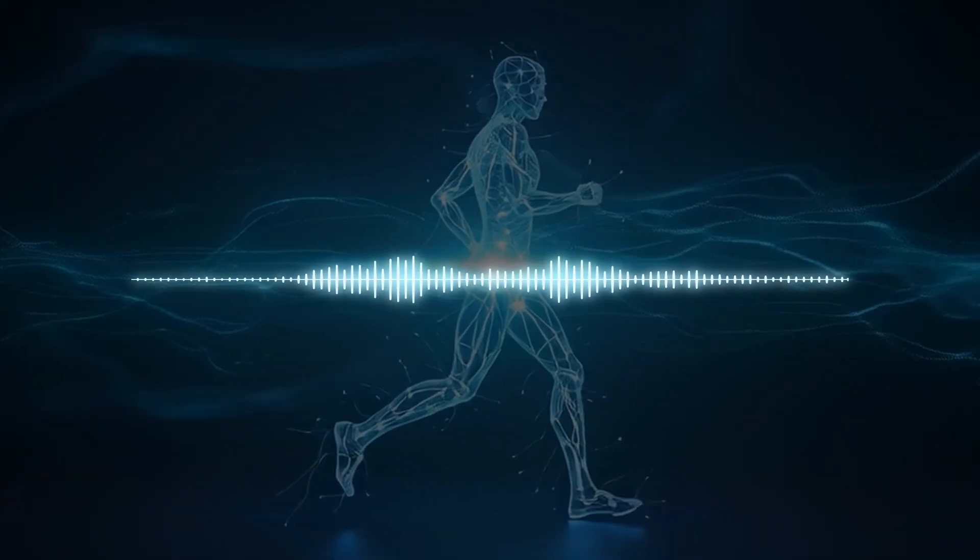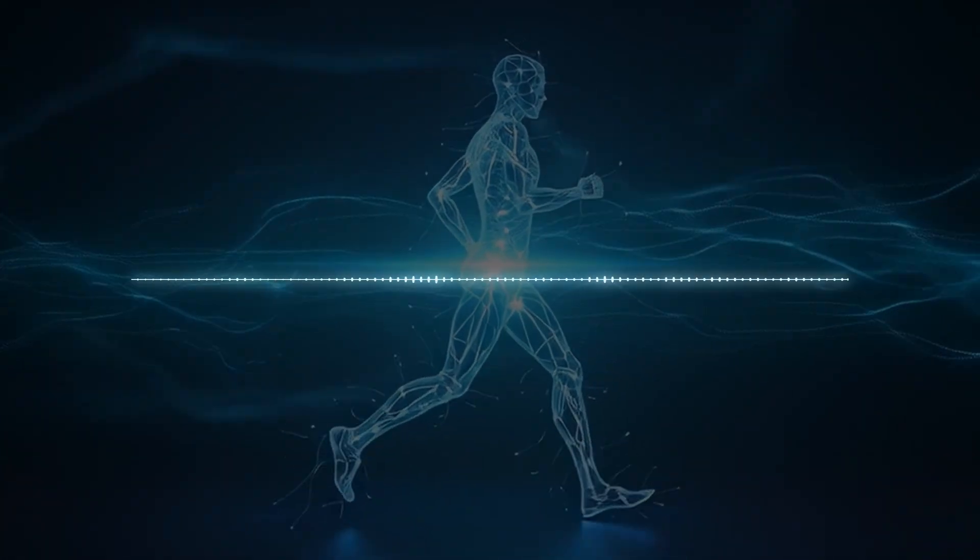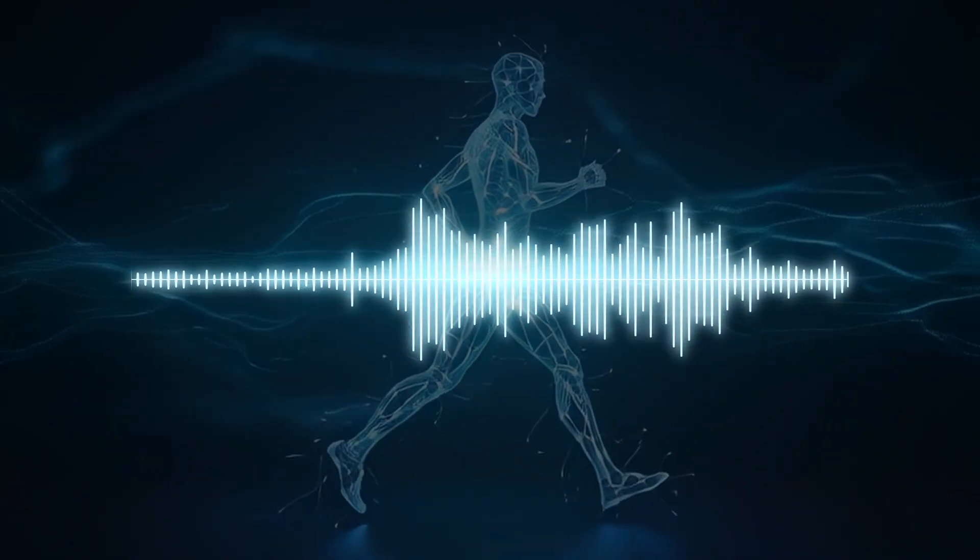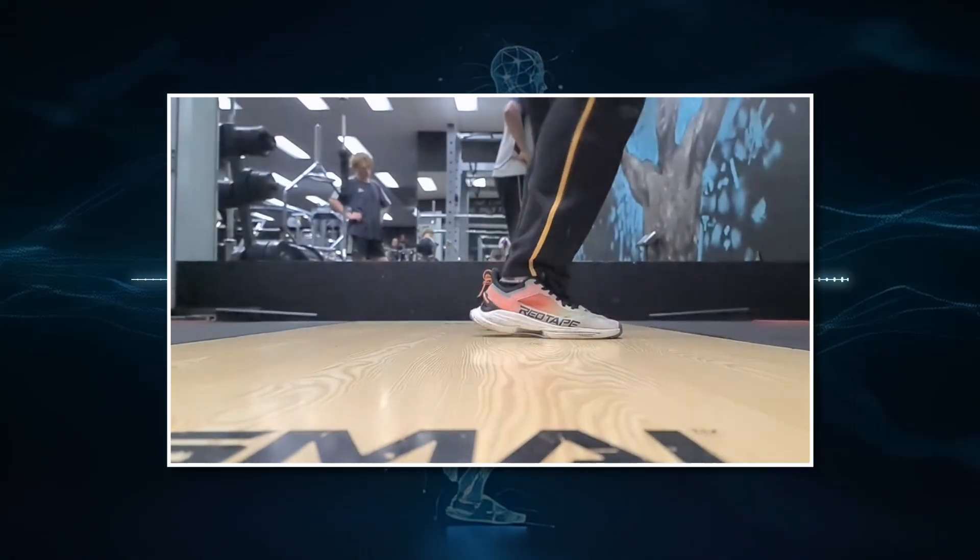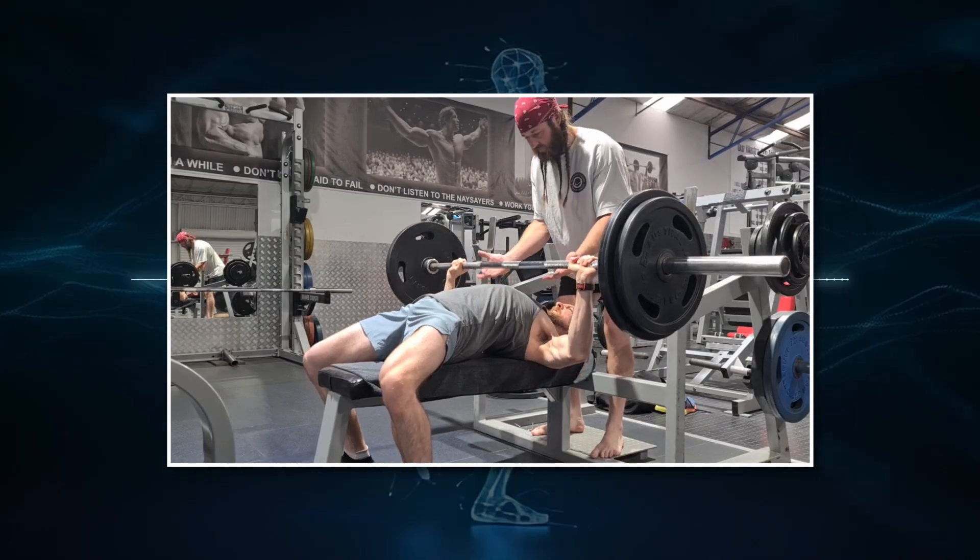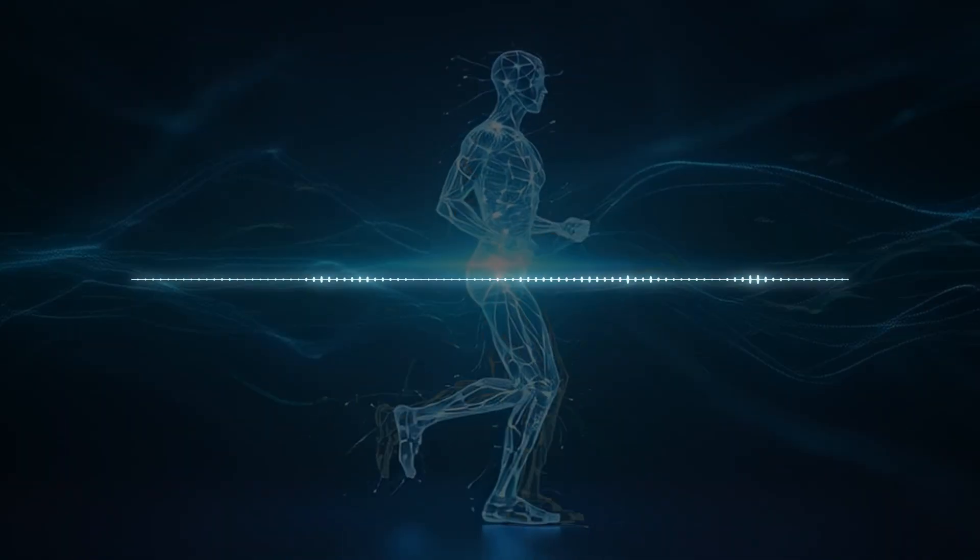So what does this mean for coaches and athletes? The research reveals a three pillar training approach for maximizing punch power. First, integrated strength and power development. Combining plyometric training for lower body explosiveness with resistance training for upper body strength. This addresses the kinetic chain from the ground to the fist that the data clearly demonstrates.